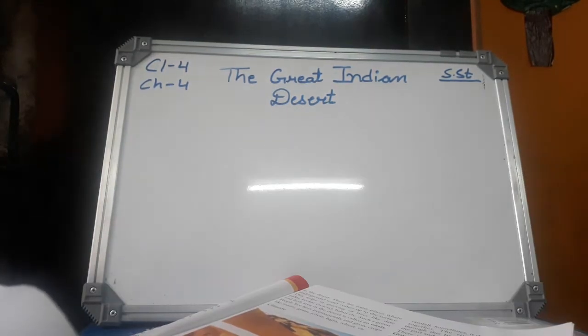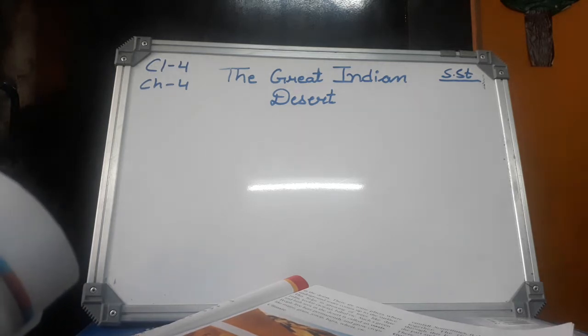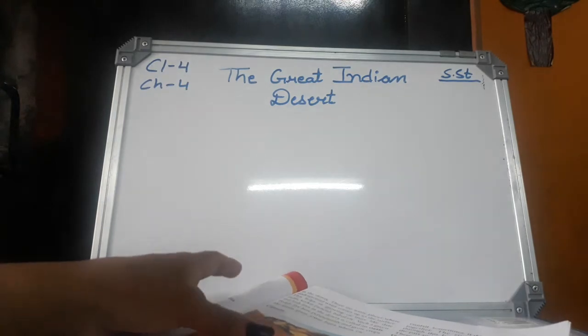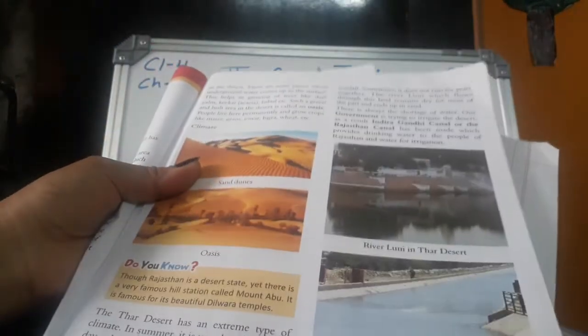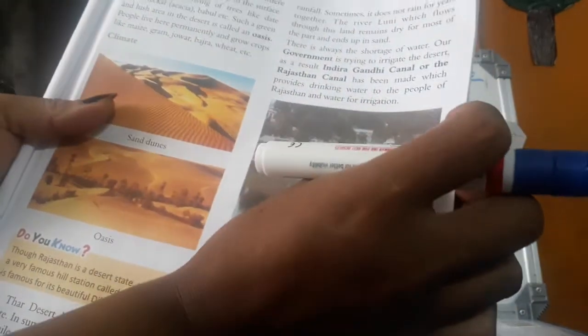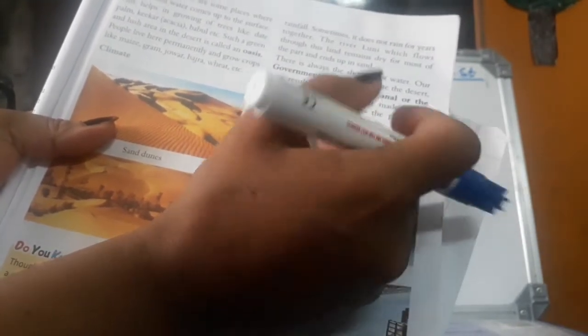Life in the desert is difficult. Most of the villages in the desert have developed around the oasis area. The dry soil allows people to grow only millets like jowar, bajra, and a few pulses that can be grown with little water. The Indira Gandhi Canal has been developed to bring water from the Satlaj River and provide it for irrigation in the barren desert. This canal is one of the longest canals in the world and has helped in growing different crops and vegetables. People rear sheep, goat, cattle, and most importantly, camel.